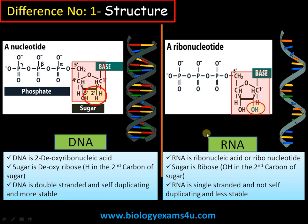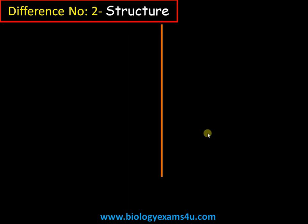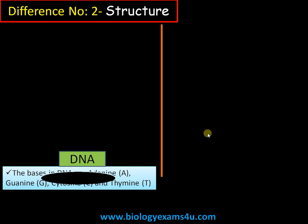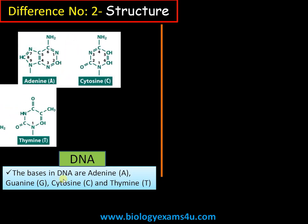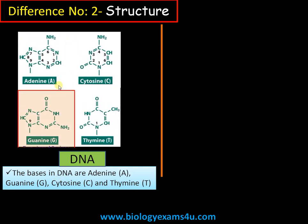Now moving to the second difference, also regarding structure — this is regarding the presence of nitrogenous bases. The bases in DNA are adenine, guanine, cytosine, and thymine. Adenine and guanine are two-ringed and are called purines, whereas cytosine and thymine are single-ringed and are called pyrimidines.